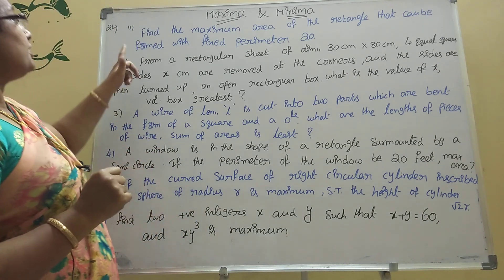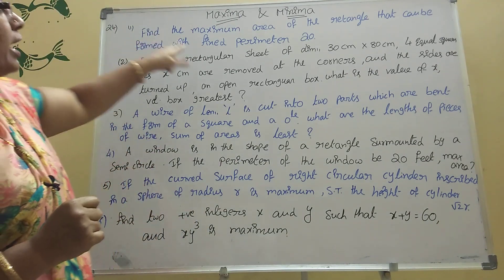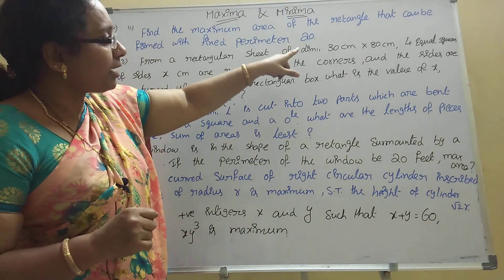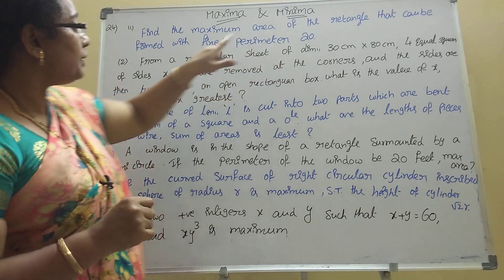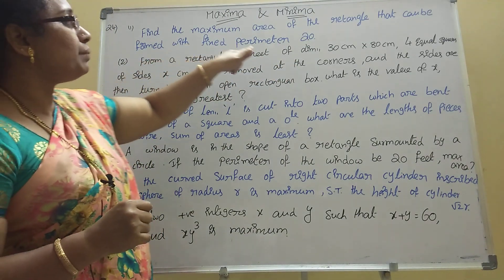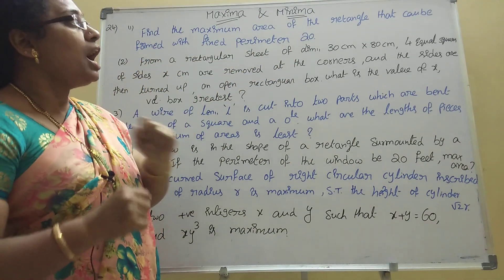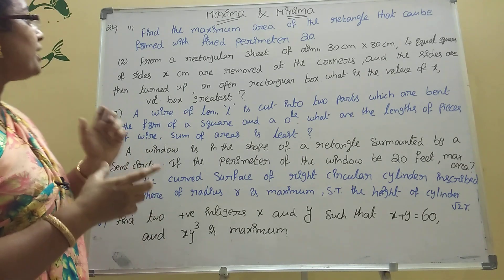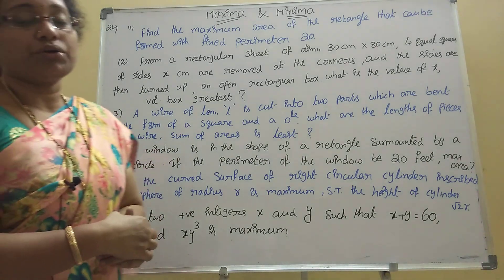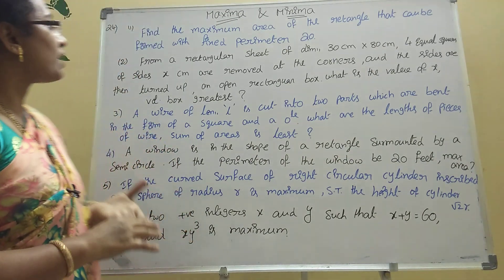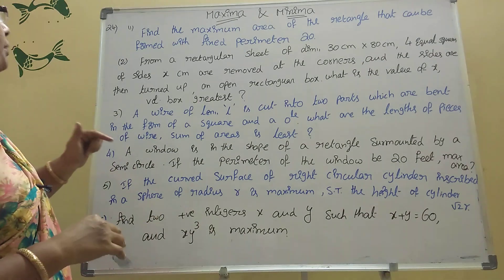First problem: Find the maximum area of a rectangle that can be formed with a fixed perimeter of 20. This is a very important model.